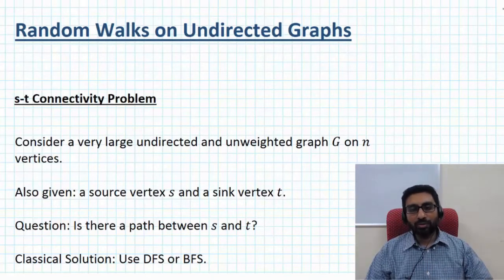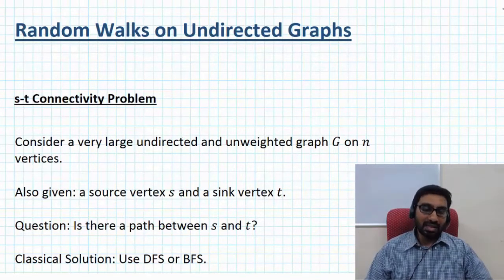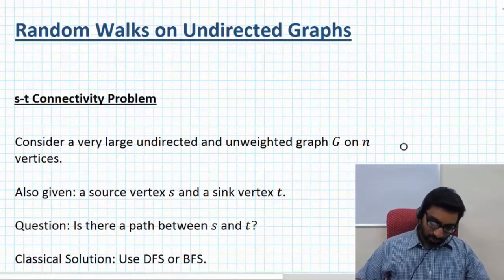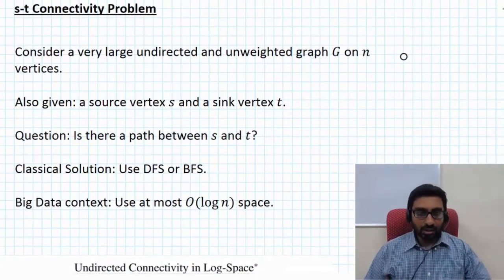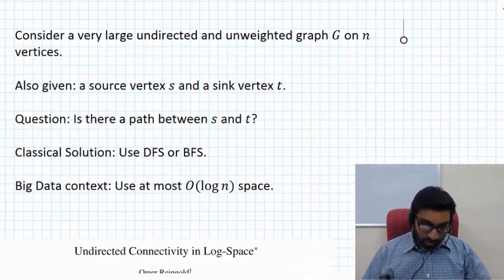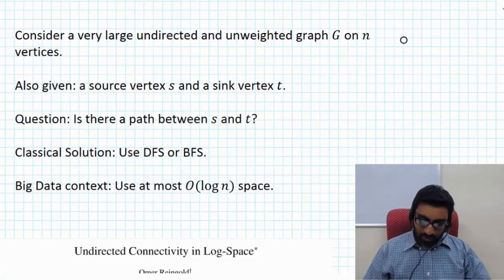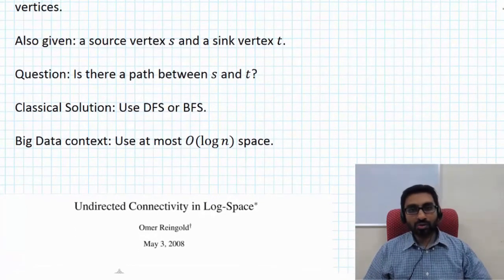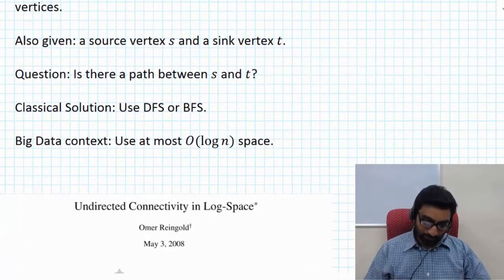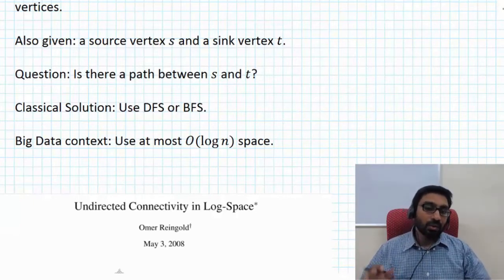In this last segment we're going to talk about random walks on undirected graphs. To motivate this problem we're going to talk about the ST connectivity problem. Consider a very large undirected unweighted graph G with n vertices — a classic big data problem. You're given a source vertex s and a sink vertex t, and we don't know whether there is a path between s and t.